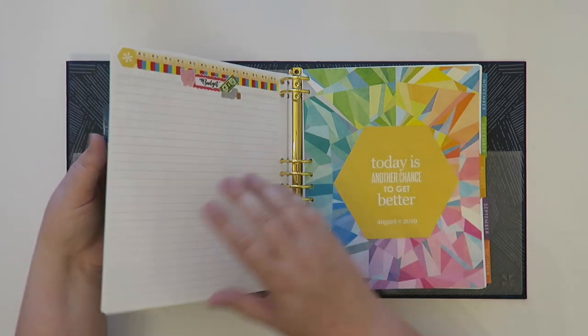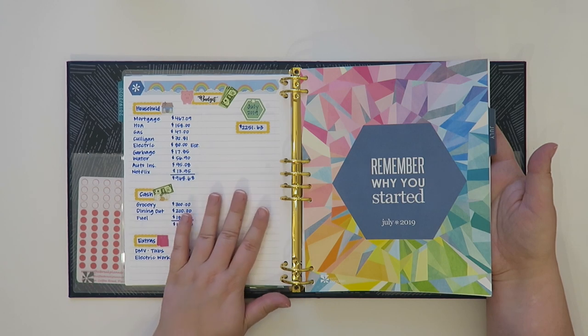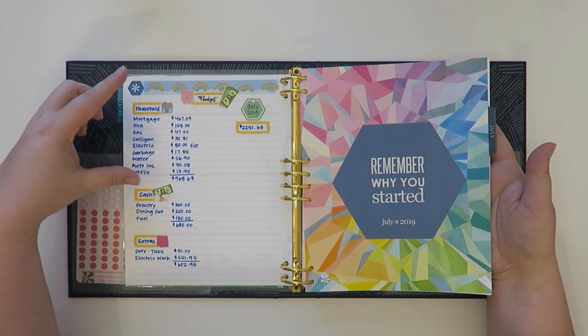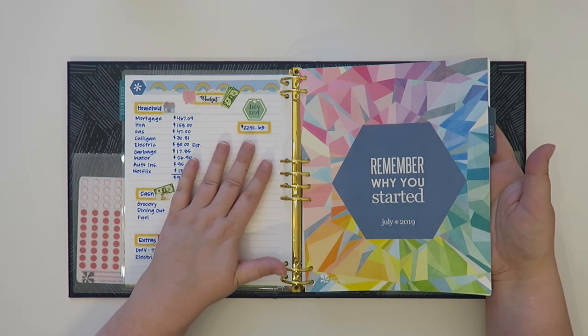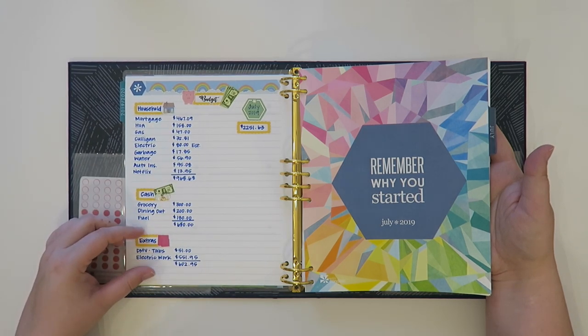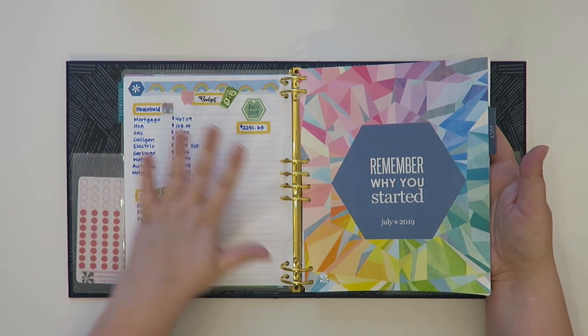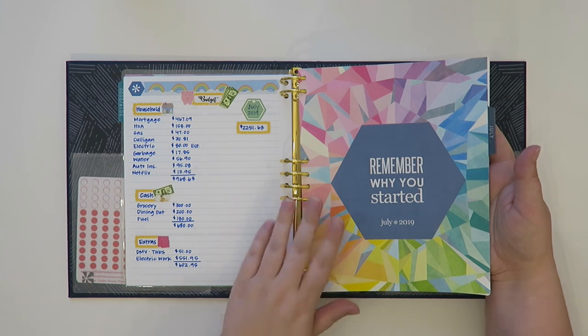So anyway let's look back at July. This was my budget for July. It has all the information on it. I break it down - I'm clearly a decorative planner person so I break it down by household, cash, and then extras and then my total over here and I like to decorate it because then I kind of stick to it at that point.